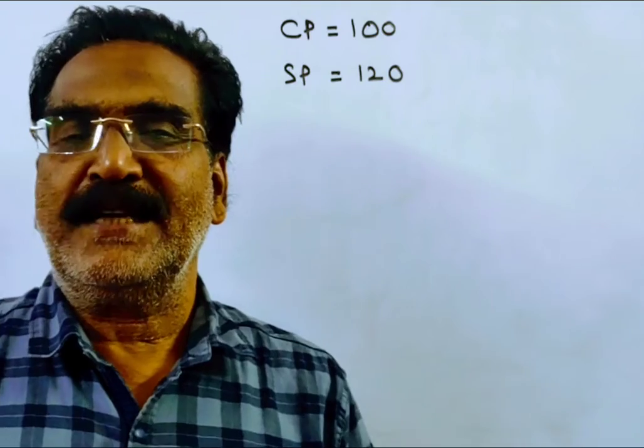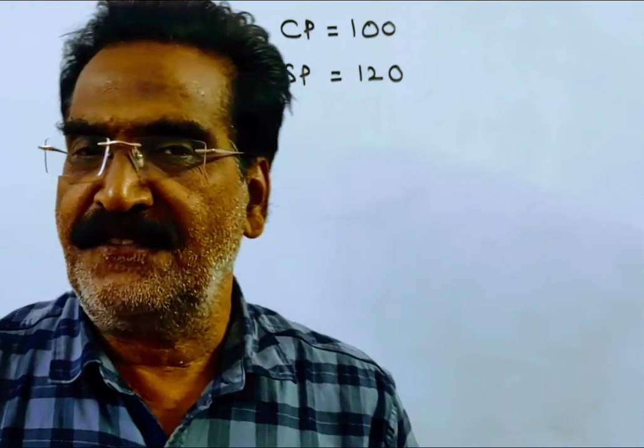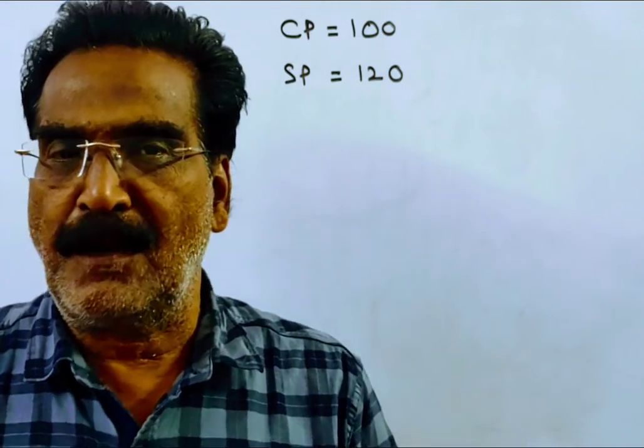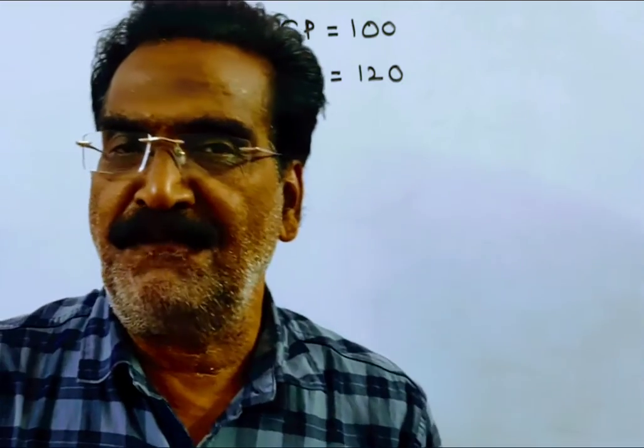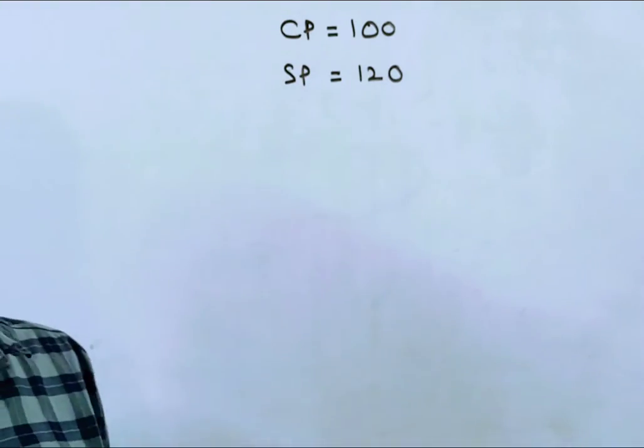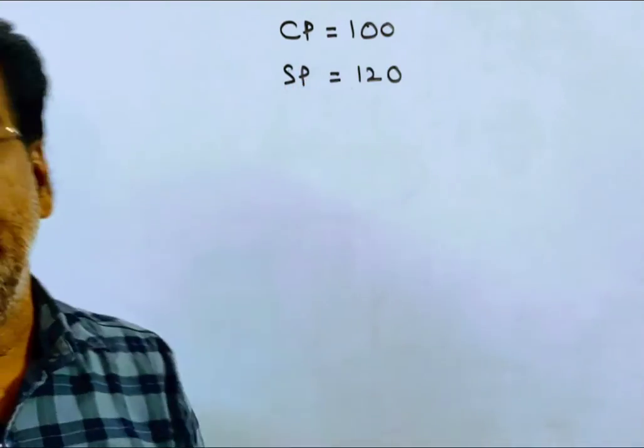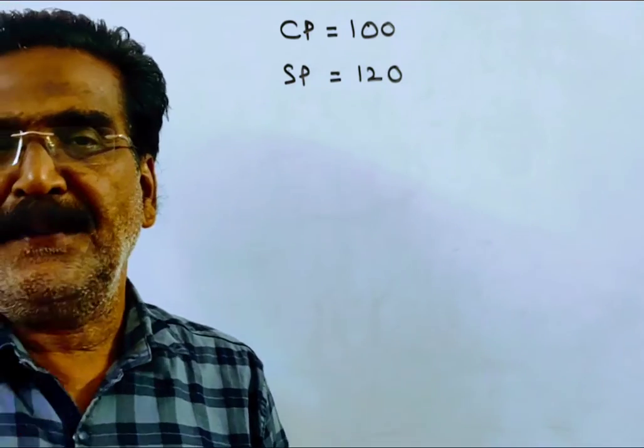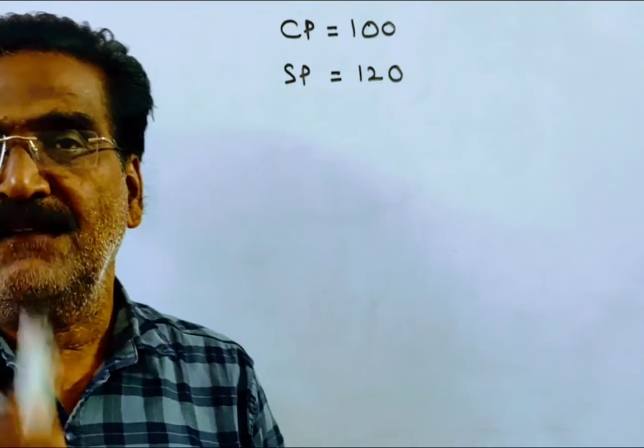Hi friends, good morning. Please look at the next problem in profit and loss. The problem is given in the description box. Cost price is 100, and the shopkeeper gets a profit of 20%.